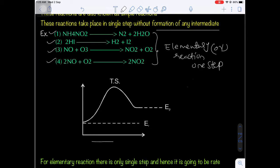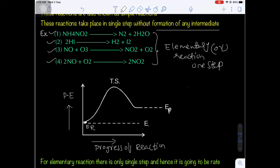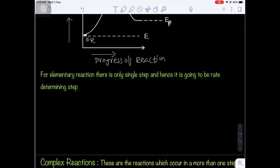In the energy profile diagram, on the x-axis is the progress of the reaction and on the y-axis is the potential energy of the system. The energy of reactants is ER and energy of products is EP. There is a transition state at the highest energy barrier, and no intermediate formation occurs. This is the elementary reaction — it has only one step, known as the rate determining step (RDS), also called rate controlling step.